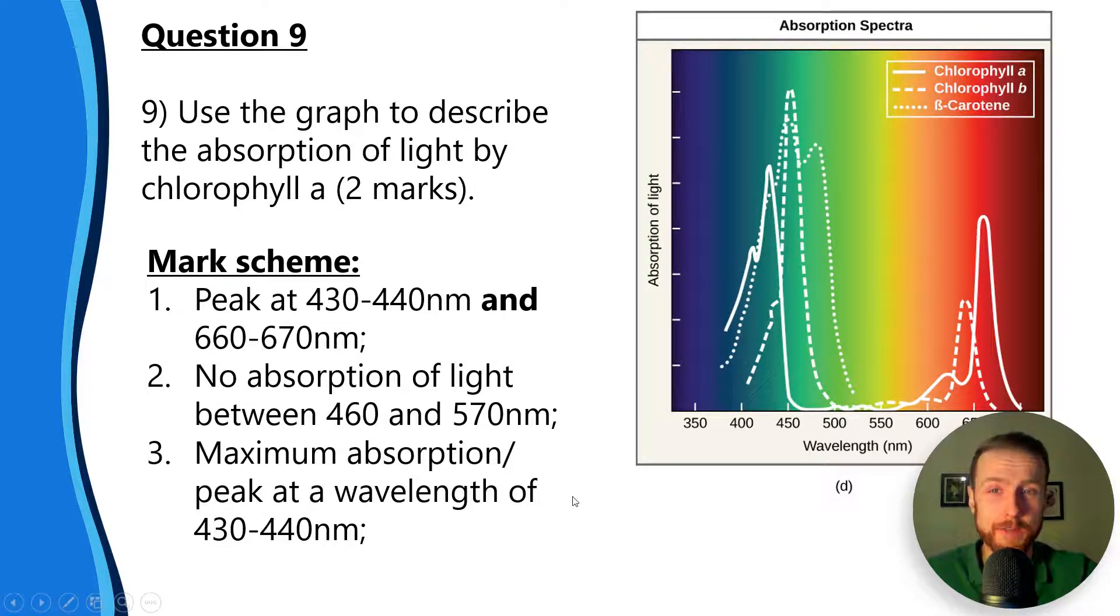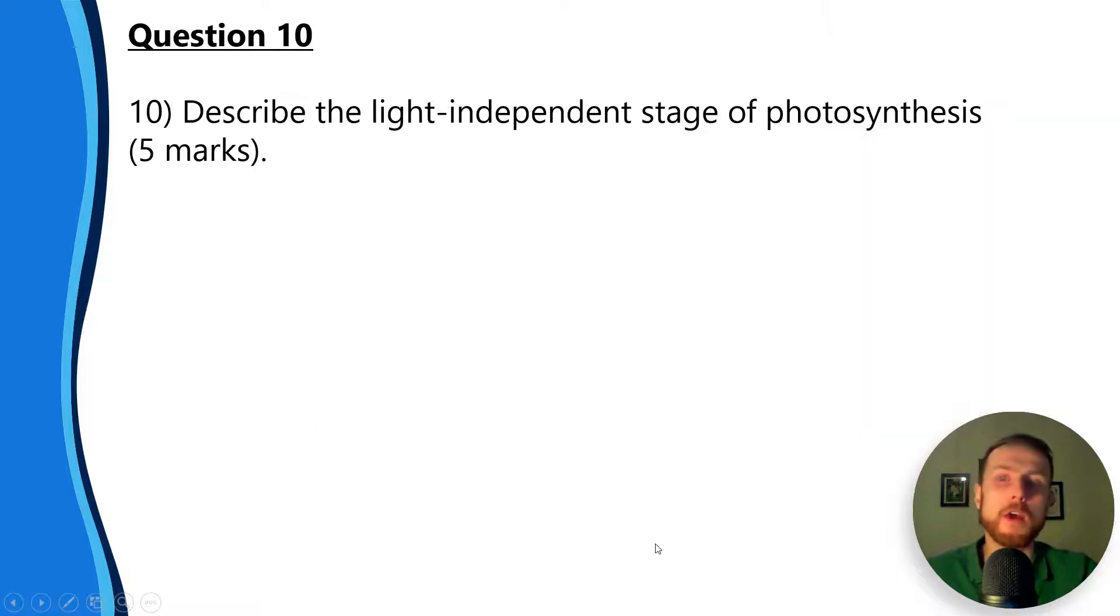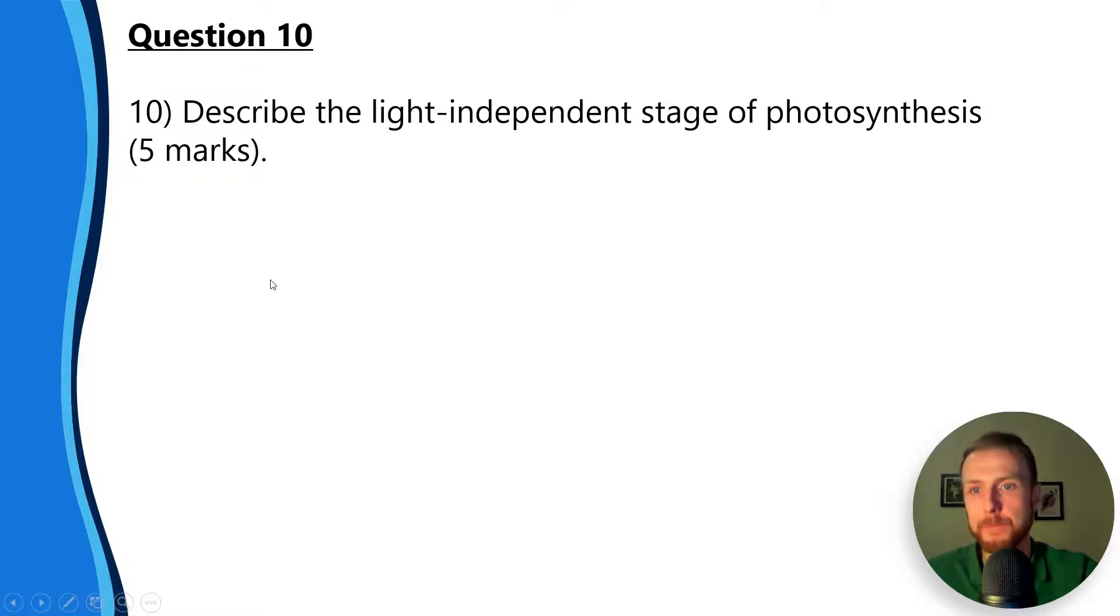Question 10: another extended response question here. Describe the light independent stage of photosynthesis. This is worth five marks, a big question. Number one: carboxylation - remember that means adding carbon dioxide. Watch my light independent video for more - of RuBP. Number two: this leads to the formation of two times GP, glycerate 3-phosphate.